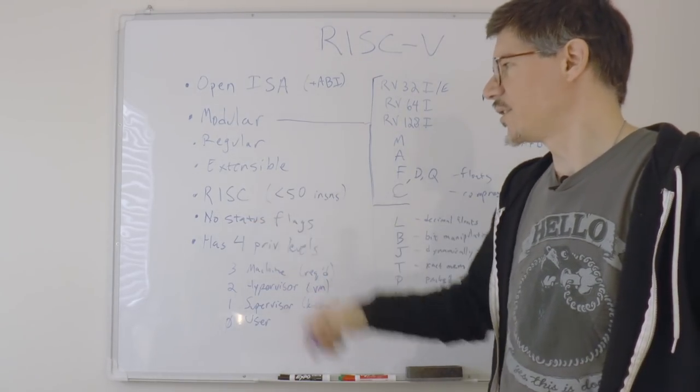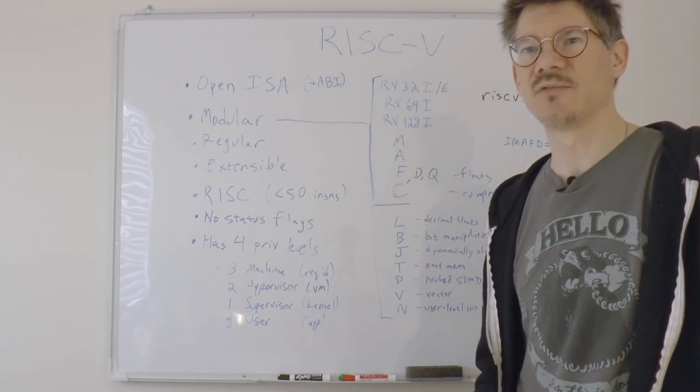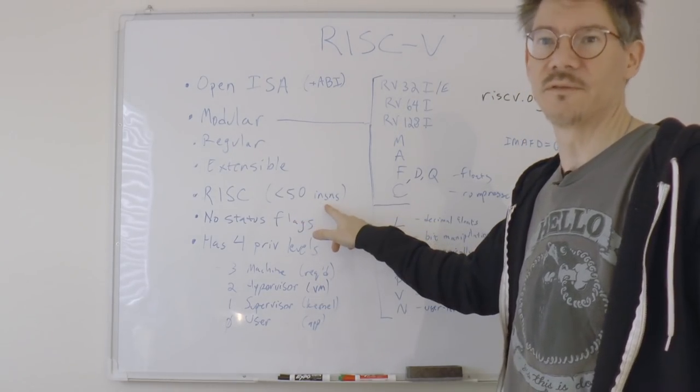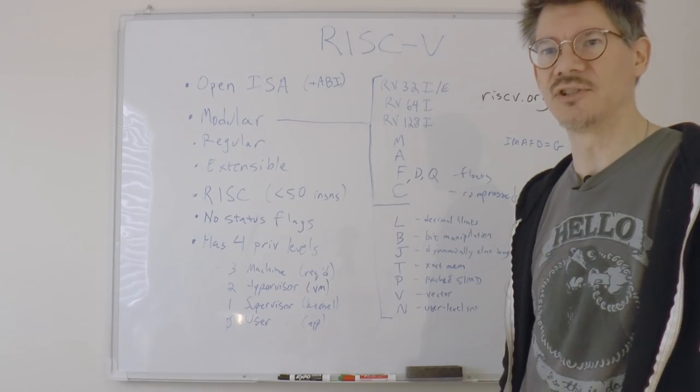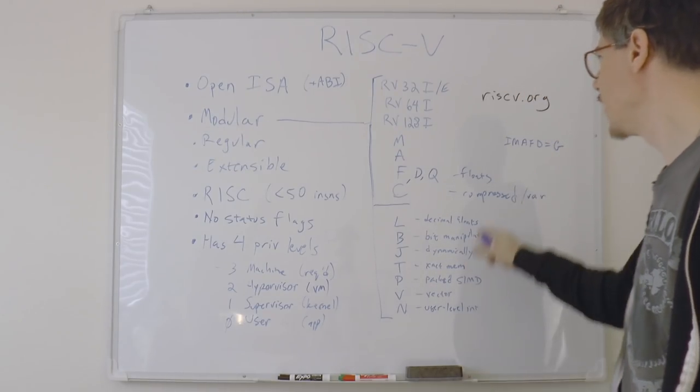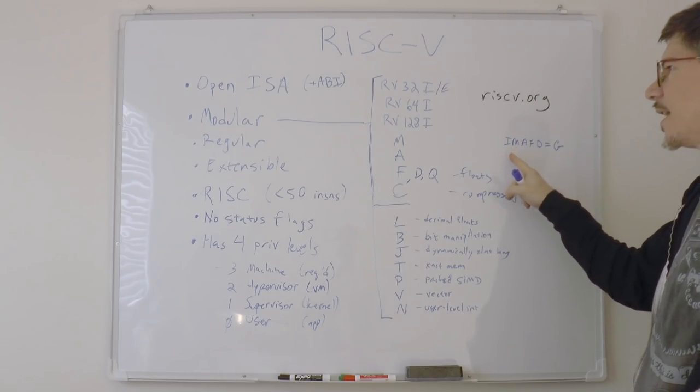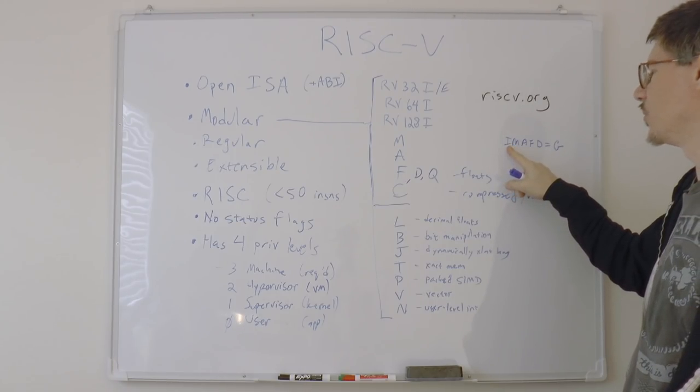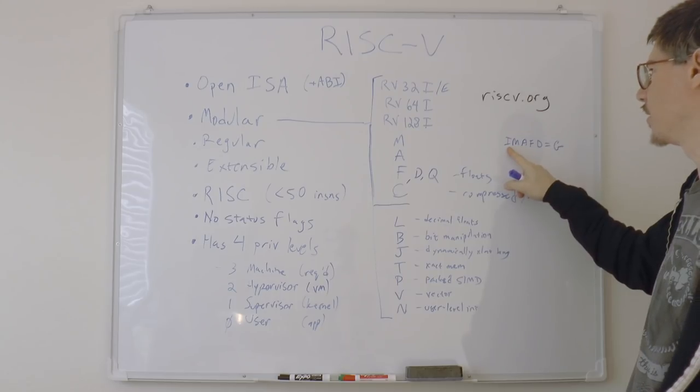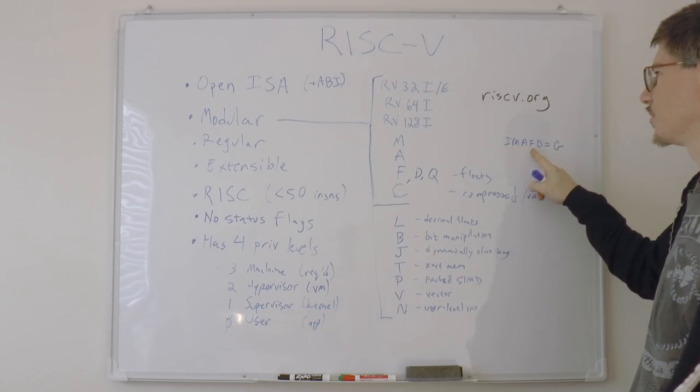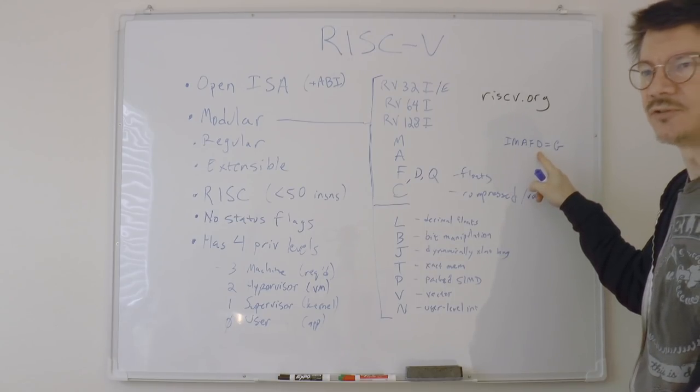Now, of course, the processor is in the RISC class, reduced instruction set. These aren't complex instructions, and there are very few of them. There's less than 50 instructions in the basic set. The basic set is called G, the general extension, which means that your processor implements I, which is of course required, integer multiply and divide, atomic memory operations, and single and double precision floats.